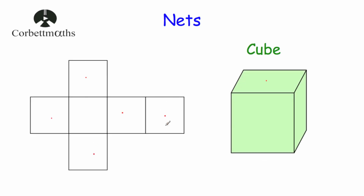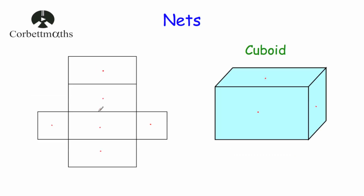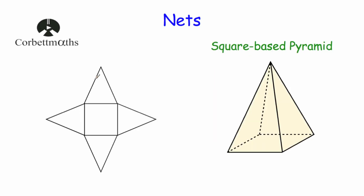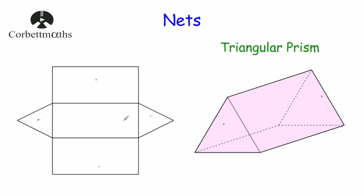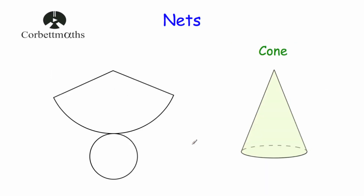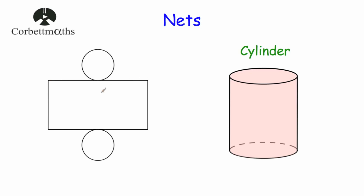So we've looked at the nets of some 3D shapes: the net of a cube — six squares; the net of a cuboid — six rectangles sometimes including squares; the square-base pyramid — a square with four triangles; the triangular prism — a rectangular base, two triangles, and two rectangles; the cone — a circle plus a sector which folds around to be the curved surface; and the cylinder — a rectangle which folds to be the curved face with a circle on the top and bottom. Now let's have a look at some questions based on those.